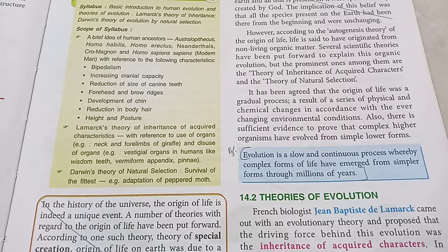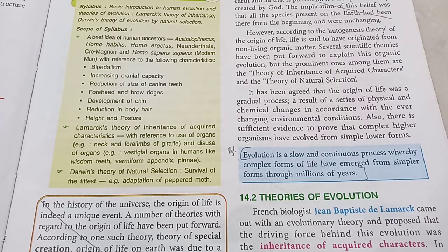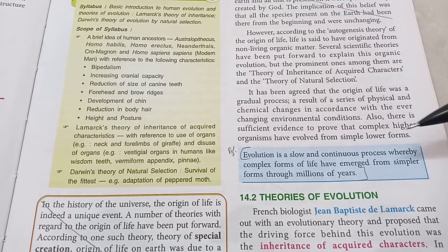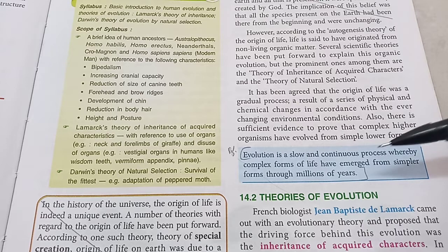And then from simple creatures, complicated creatures were created like men, and even more complicated like women, which is at the peak of evolution — the most intelligent species on earth. Evolution is defined as a slow and continuous process where complex forms of life have emerged from simpler ones through millions of years.